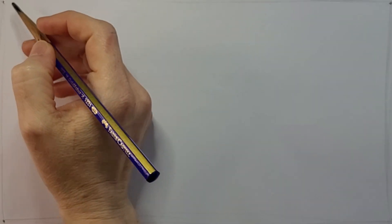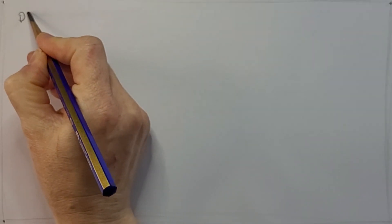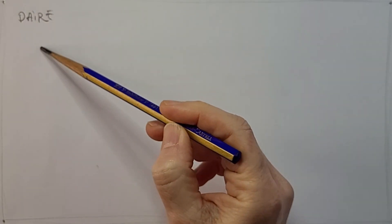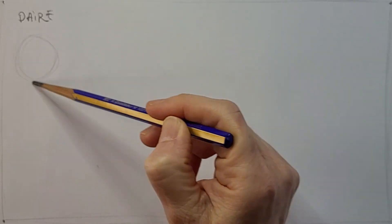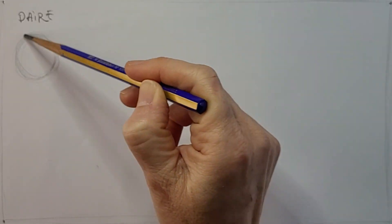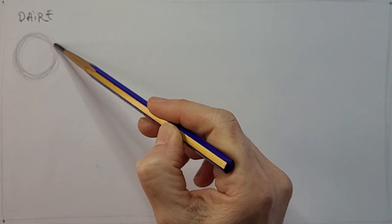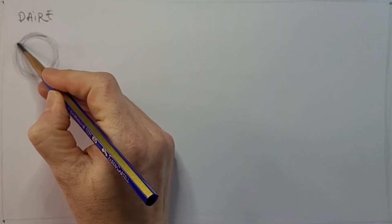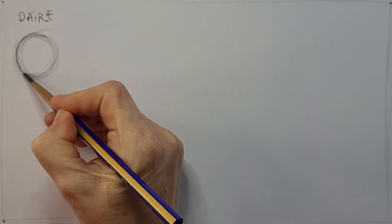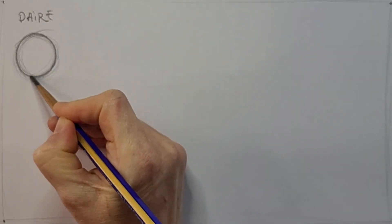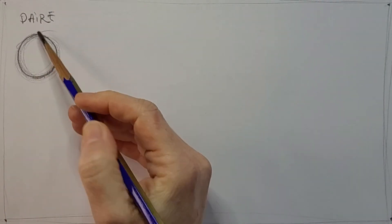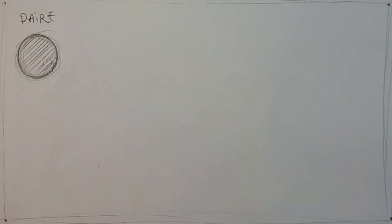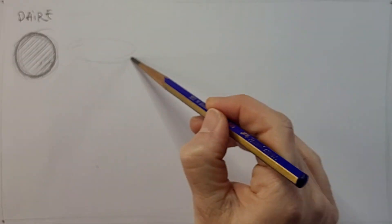Son olarak daire. Bahsetmiştik değil mi? Artık bu noktaların, bu kenarların sayısının epey bir artmasıyla ne ortaya çıkıyor? Bir daire ortaya çıkıyor. Bu da bizim daire yüzeyimiz.